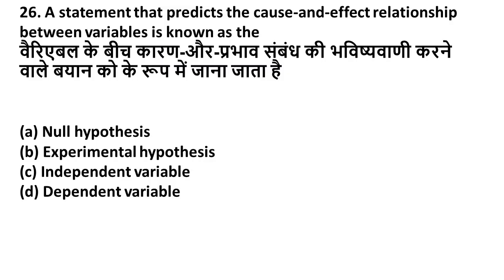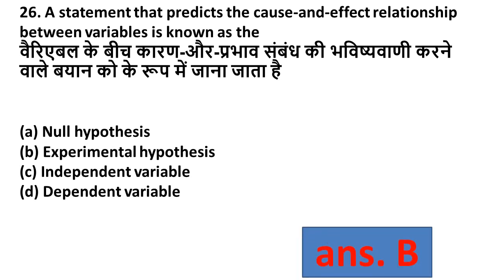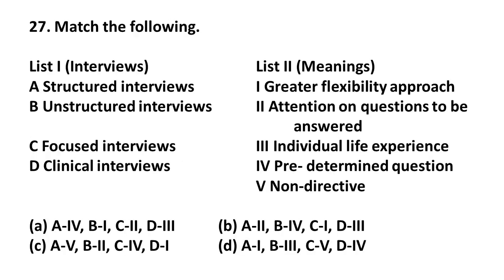Question 26: A statement that predicts the cause and effect relationship between variables is known as — Option A: Null hypothesis, Option B: Experimental hypothesis, Option C: Independent variable, Option D: Dependent variable. The right answer is Option B — Experimental hypothesis, as it predicts the cause and effect relationship between variables.